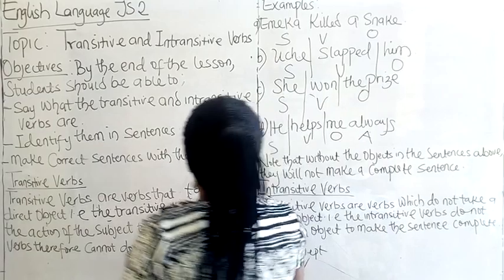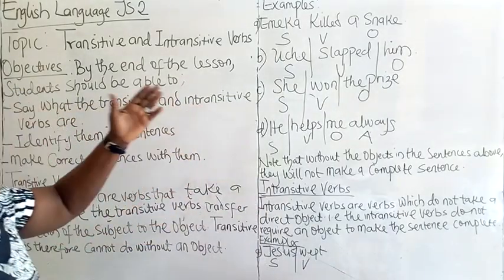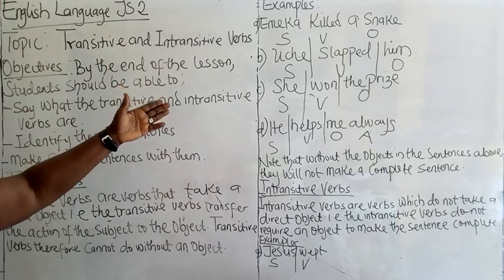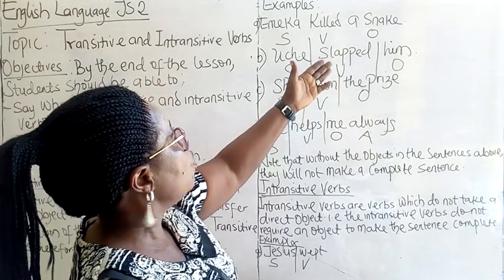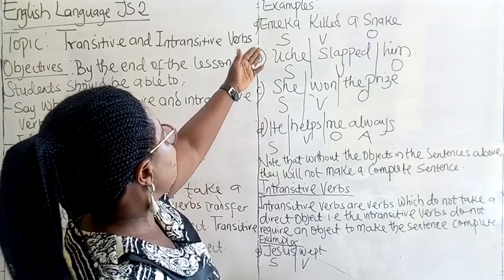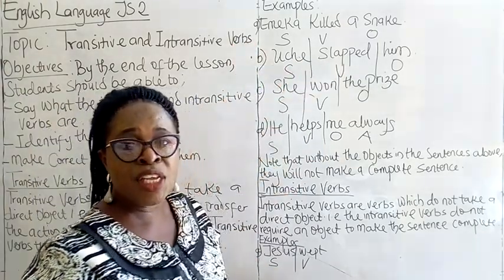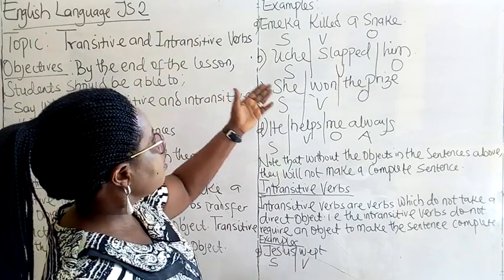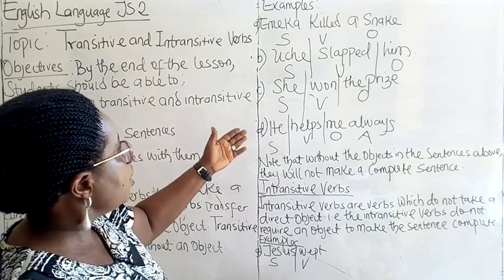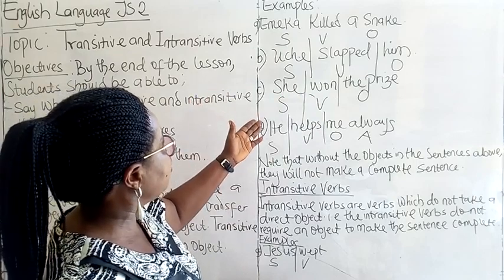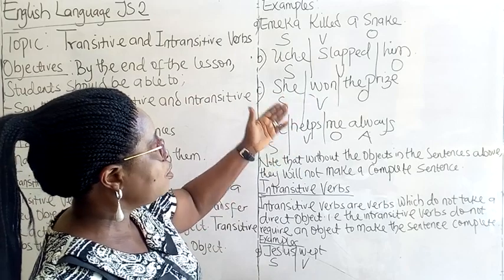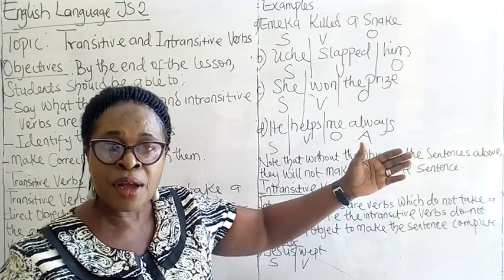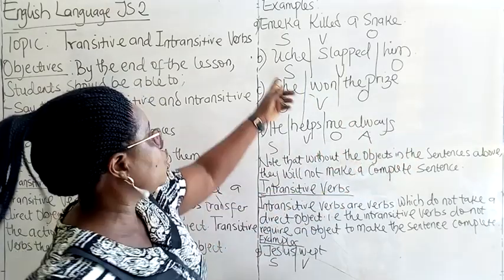For example, Amecha kills a snake. Amecha is the subject, which is the doer. We have 'kills' as the verb and 'snake' as the object. Amecha is the subject while the snake is the object. Uche slapped him — Uche is the subject, 'slapped' is the verb, that is the action, and 'him' is the object, which is the receiver of the action of the subject.